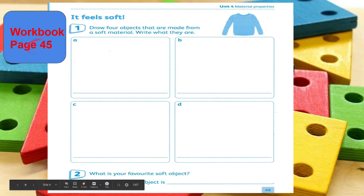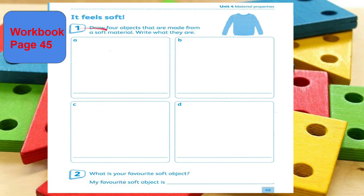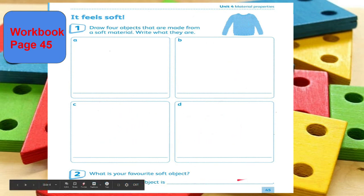Workbook page 45, it feels soft. Number 1, you have to draw four objects that are made from a soft material. Write what they are. After you draw, you will write what is your favorite soft object. Complete this sentence: My favorite soft object is — choose among what you have drawn.